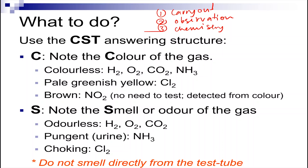So how do I write down the observation? I will use the CST method — I will state the colour, the smell, and the test for the gas. For the colour of the gas, there are only three colours that you are interested in for this topic: colourless, pale greenish-yellow (that's for chlorine), or brown for nitrogen dioxide. All other gases are colourless.